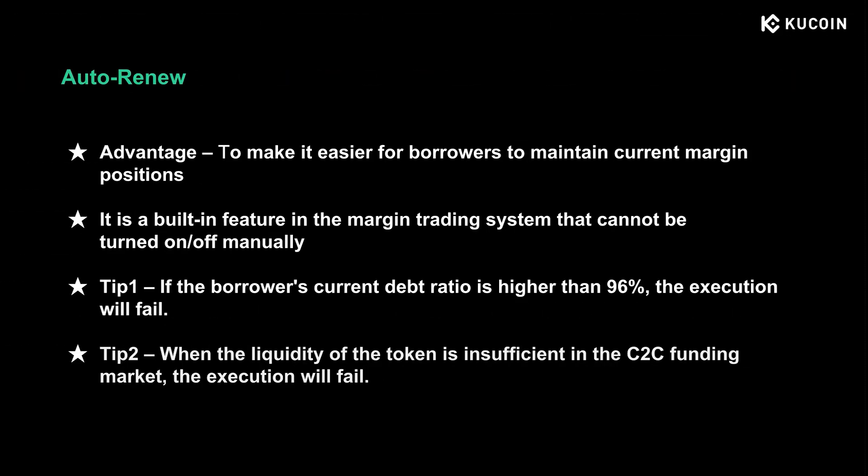Last but not least, auto-renew. Auto-renew simplifies the borrowing process while maintaining your current margin positions. It is triggered when a loan is about to expire and the corresponding asset in your account is insufficient. In that case, the system will automatically borrow the same amount of the corresponding debt asset to continue the debt. It is a built-in feature, so you cannot manually switch it on or off. Auto-renew will fail if the current debt ratio in your account is higher than 96%, or when the liquidity of the token is insufficient in the C2C funding market.